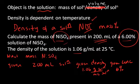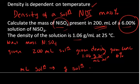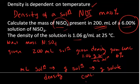How are we going to figure out the mass of the solute present? We're going to start with what's given, which is the volume in units of milliliters of the solution, and convert that to grams of solution. Then from grams of solution we can convert to grams of solute. The conversion factor between milliliters of solution and grams of solution is the density, and to get from grams of solution to grams of solute we'll use the concentration in units of mass percent.